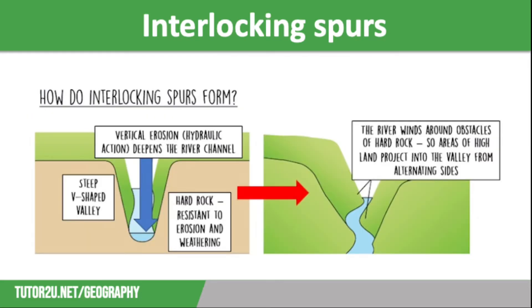You can see this process a little bit more clearly in the diagram on the screen. You can see the vertical erosion deepening the river channel, that steep V-shaped valley, the hard rock being resistant to erosion and weathering, and then the river winding around those obstacles of hard rock, so areas of highland project into the valley from alternating sides.